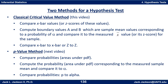In the critical value method, we compare x-bar values to other x-bar values, or z-scores to z-scores. We end up computing boundary values — a lower critical value and an upper critical value — which are sample mean values corresponding to a probability of alpha, and compare those to the measured x-bar value or its z-score for the sample. So we end up comparing x-bar to x-bar, or z to z.